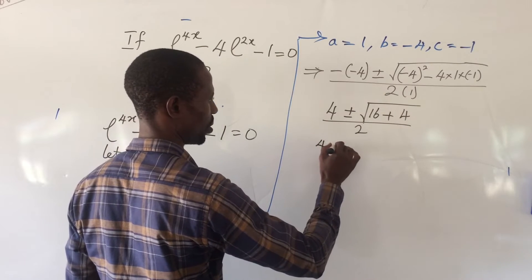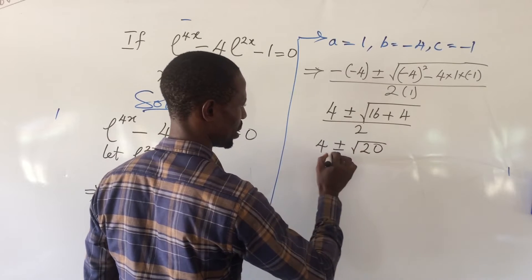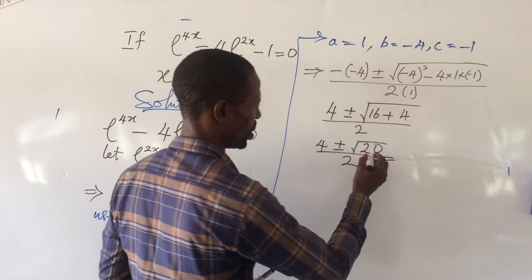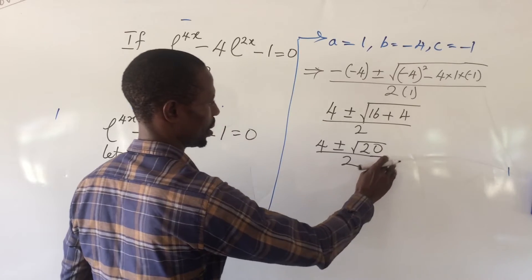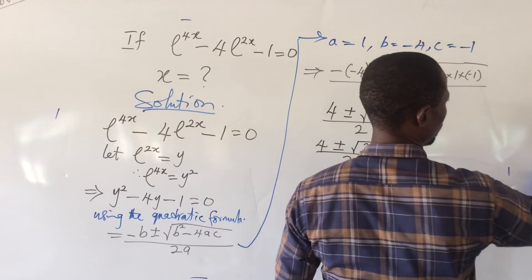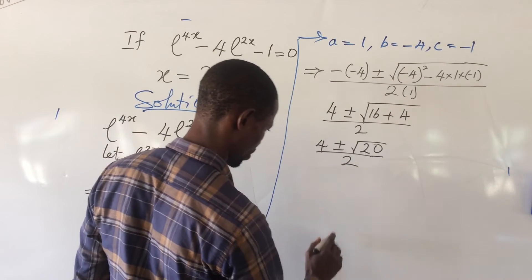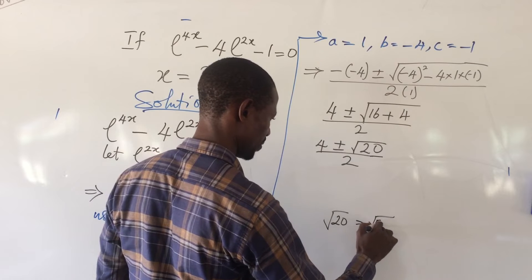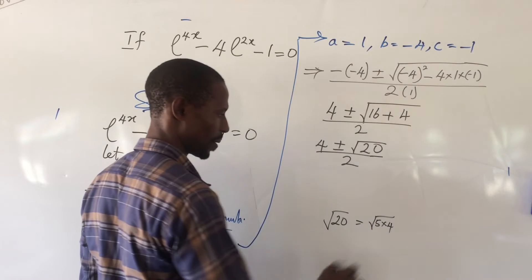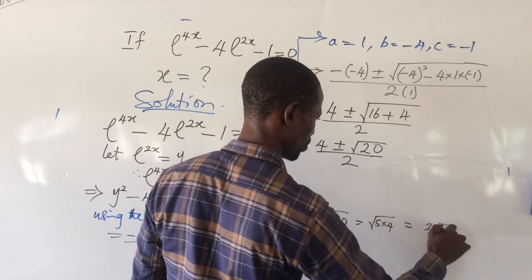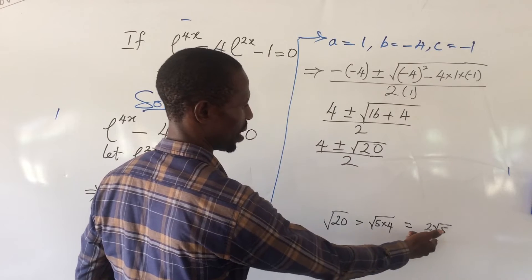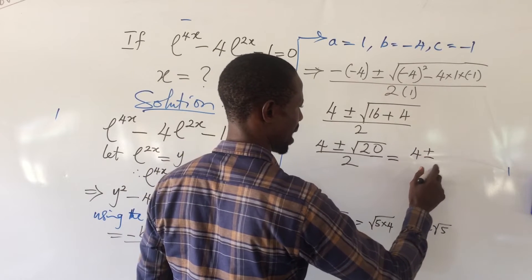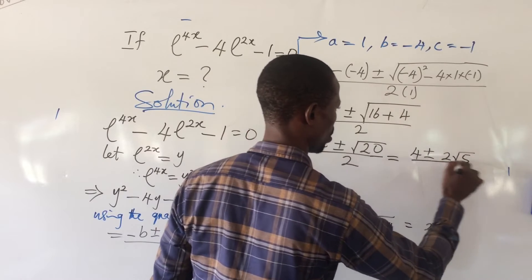If you look carefully, 20 can also be expressed differently. Root 20 can be written as root 4 times root 5, which gives us 2 root 5. So 20 can be written as 2 root 5. If we substitute that in, this now becomes 4 plus or minus 2 root 5, all over 2.